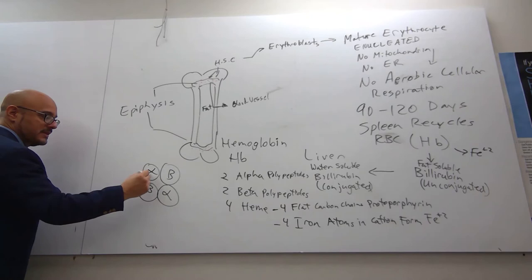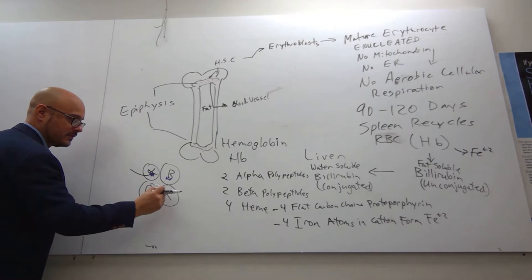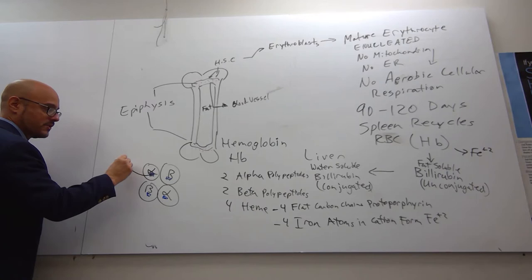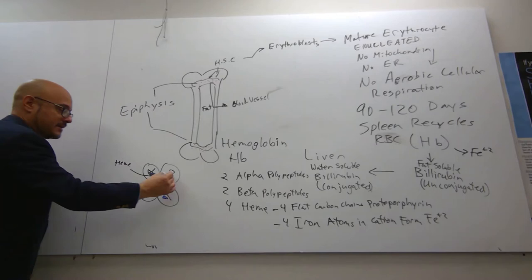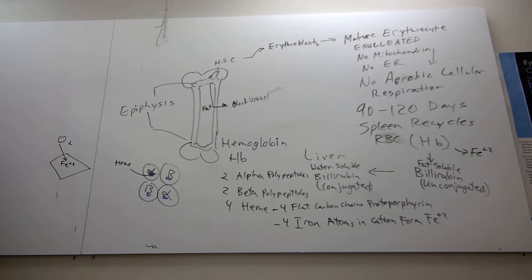Each one of these has the heme in the middle. In that heme is where you have the flat carbon chain with iron in the middle. The heme is where oxygen will bind. That flat carbon chain, with iron in the middle—oxygen binds to iron within the heme. That heme sits within each alpha-beta polypeptide protein.